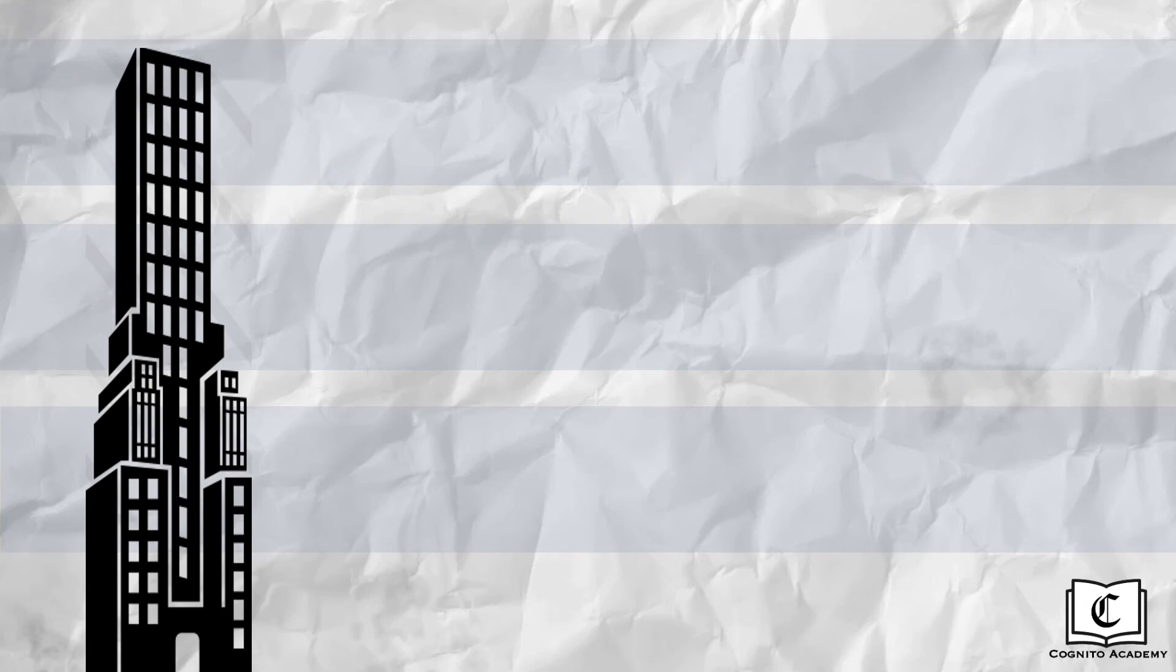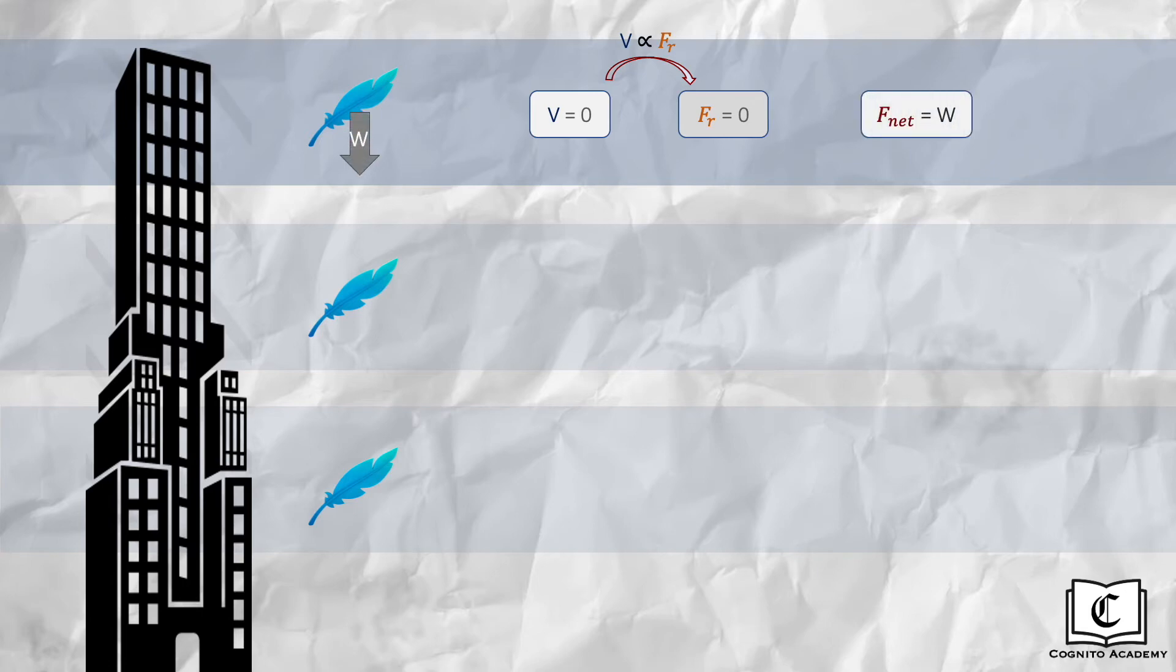Let's take a closer look at what is happening to the feathers at each instant of the fall. When the feathers are first released, its velocity is momentarily zero, and no air resistance acts on it, since air resistance is proportional to velocity. Therefore, the only force that acts on it is its weight, which results in its downward acceleration of 9.81 meters per second squared, as acceleration is given by net force divided by mass.